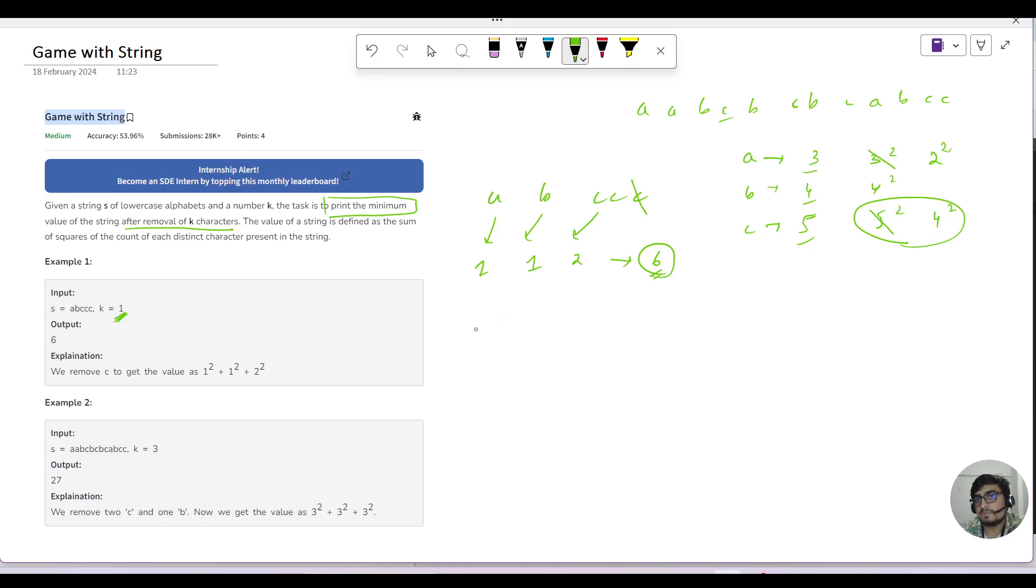Okay, so the intuition is that wherever the number is largest, we will remove it all the time. So here the largest number is 5, so I will make it 4. Now I can remove two characters because k was equal to 3. I have removed one here, so I have to remove two. So I will check which is the largest. So there are two largest numbers which are 4 and 4. I will again remove one and this will become 3. Now I have one removal remaining. I will see the largest number here and I will remove one more and this will become 3. And then you will have your final answer as 3 square plus 3 square plus 3 square which will give you 27.